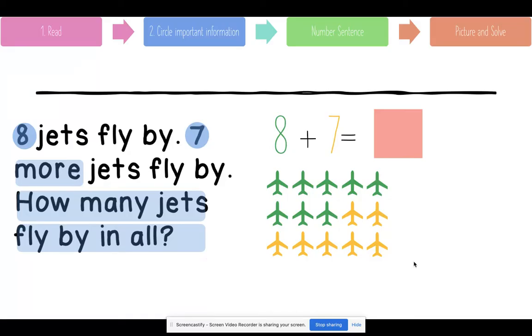What is the total number of jets? Let's count. If you started with eight, we can count on and say nine, ten, eleven, twelve, thirteen, fourteen, fifteen. Is that what you got? Good job. Eight plus seven equals fifteen. So we saw fifteen jets in all.